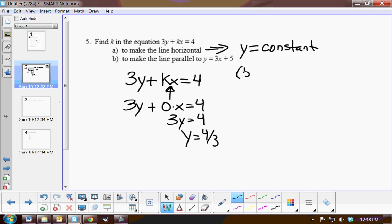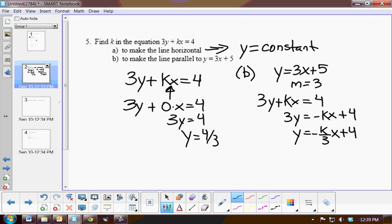Now for part B, we want it to be parallel. So we know that parallel lines have the same slope. Since the equation given to us has a slope of 3, I want the equation 3y plus kx equals 4 to have the slope of 3. So I'm going to put it in slope-intercept form to identify the slope quicker. So I subtract kx, divide by 3. So negative k over 3x plus 4. So here is my slope, negative k over 3. And I want that term to have a slope of 3. So if I multiply by a negative, I get k over 3 equals negative 3. Multiply by 3, therefore k must be negative 9.